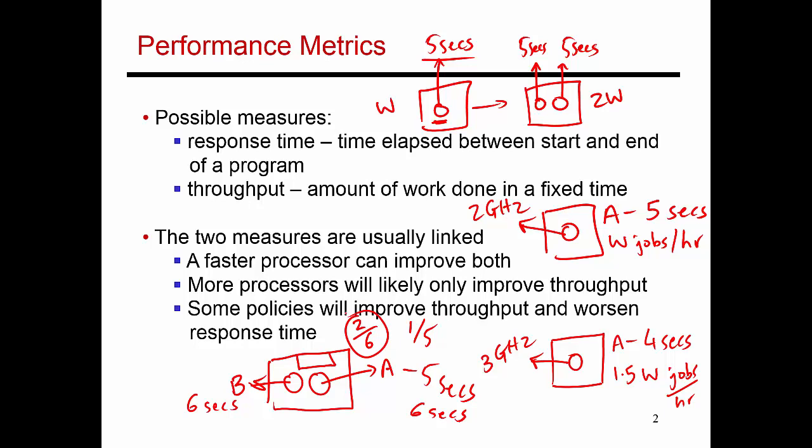So this is a policy, the policy of scheduling two threads together on the same processor, that has lowered response times of individual threads, but that has increased the overall throughput of the system. Now, you can also have designs where you do the opposite, where you improve response times but worsen throughput. So before I explain that, let me just clear up the screen a little bit.